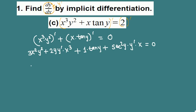We need to isolate y prime. We have y prime appearing in two terms, so we factor y prime out from those two terms and move the other terms to the right side: subtract 3x squared y squared and subtract tangent y.